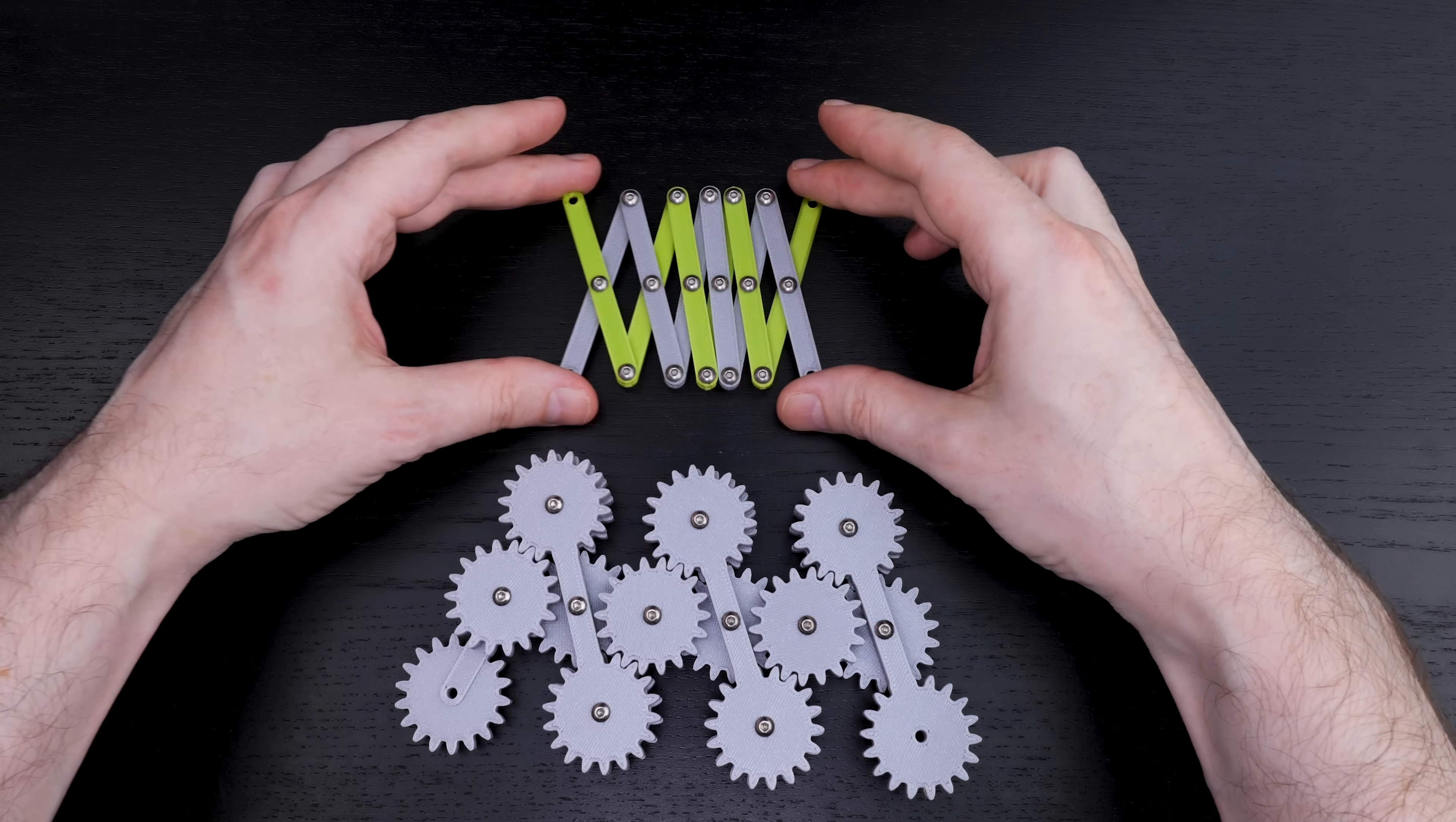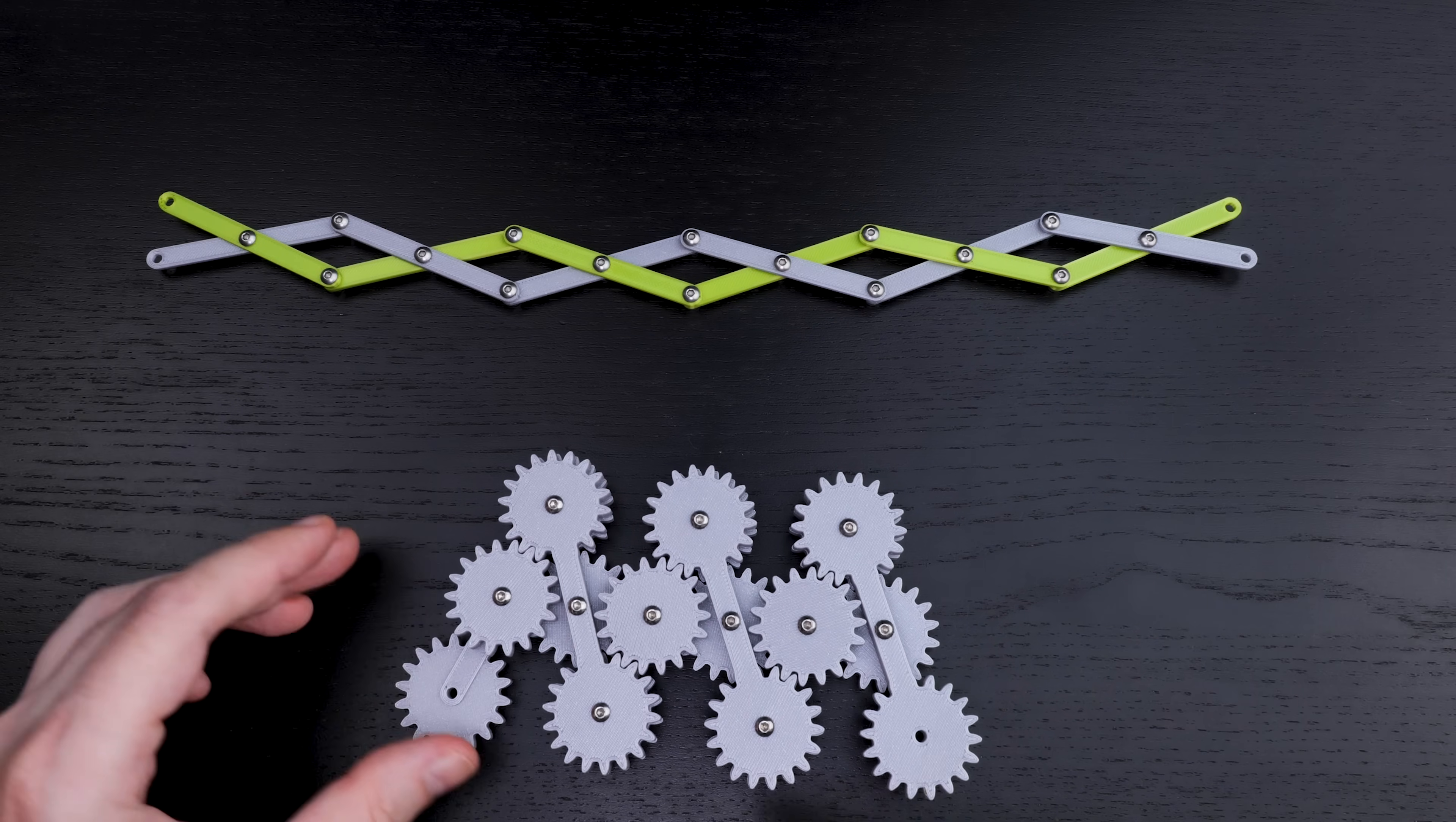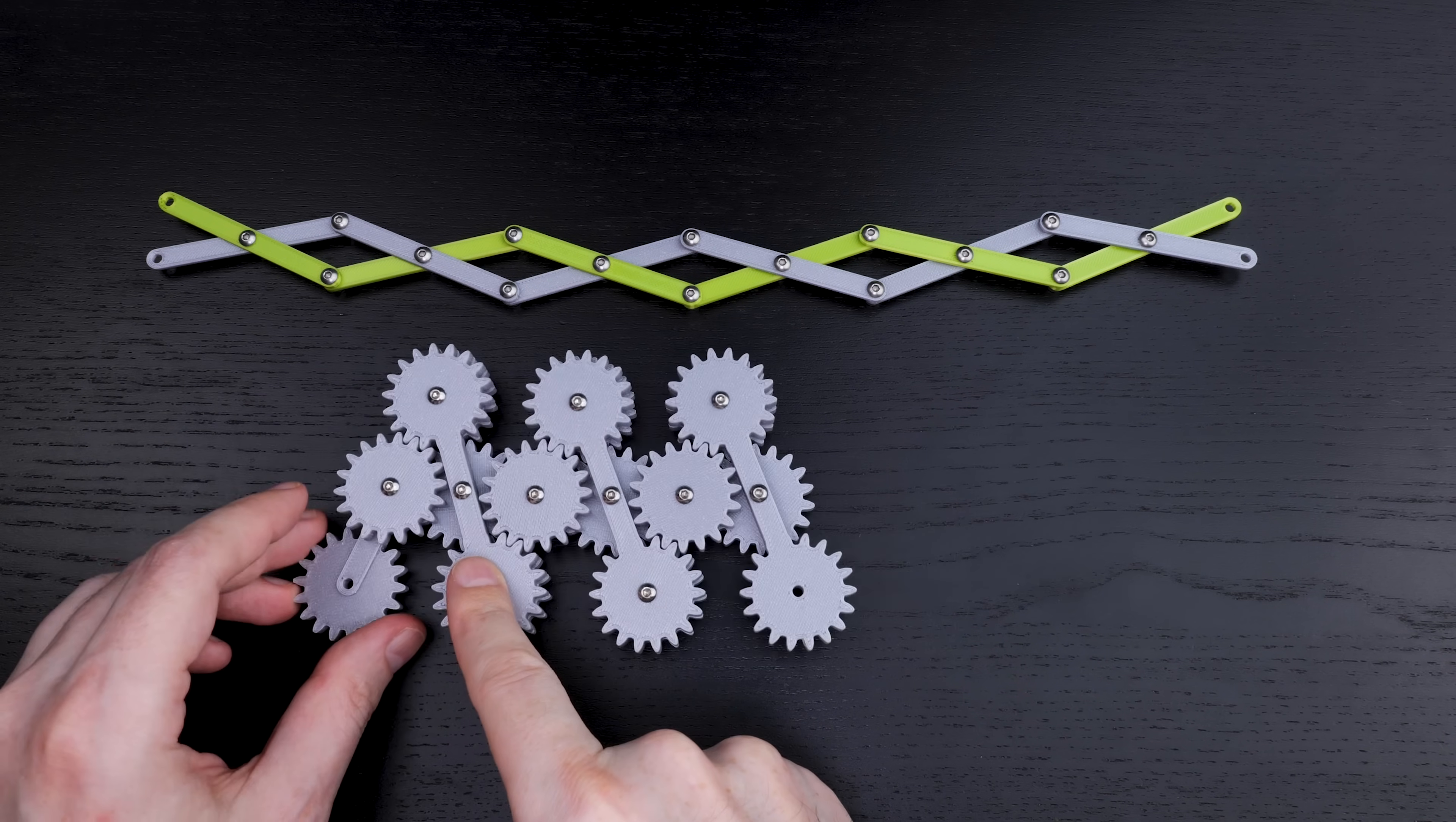On the other hand, the standard scissor linkage gets stuck here, right? You can't go past this position. Whereas the half scissor linkage goes right through straight and can collapse on the other side.